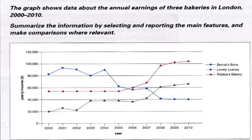Let's look at the info of Bernie's Buns — this would be our first body paragraph. We want to mention three things: the starting point, which was £20,000; second, the fluctuation; and the last point is a considerable increase after 2006 until the last given year.